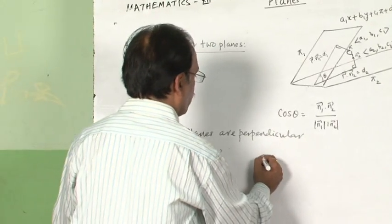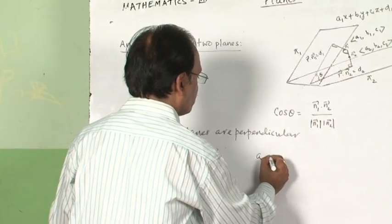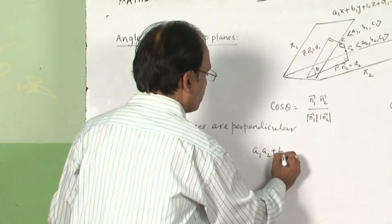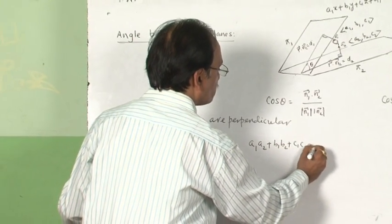90 degrees and cos 90 will be 0. So we will find that the result will be a1a2 + b1b2 + c1c2 = 0.